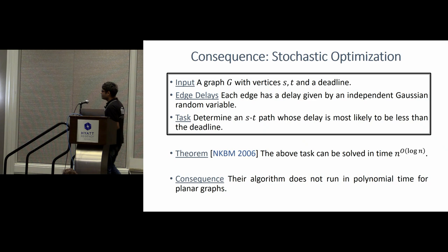So why were Nikolova et al studying this problem? They had a similar related problem to the traffic problem I just described. They had a graph, and they had a deadline to meet. So, you start from a particular vertex, and you have to get to another particular vertex within a certain deadline, within a certain time, and every edge you take will incur a certain amount of time delay, which is given by an independent Gaussian random variable, and your aim is to determine an ST path whose expected delay is most likely to be less than the deadline. And what they showed is that this task can be solved in time n raised to log n. Now, in their algorithm, everything ran in polynomial time except the one step where for planar graphs, they use the conjecture that for planar graphs, the parametric complexity is at most polynomial, but now that we know it's not, so their algorithm does not run in polynomial time. However, there could still be a polynomial time algorithm for this problem.